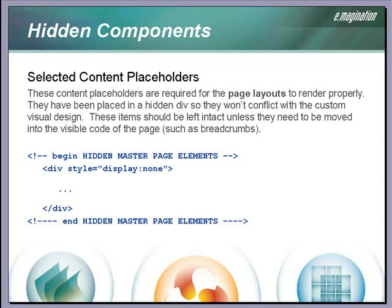Those hidden elements have been placed in a div tag at the bottom of the code with the style set to display none. These elements include many content placeholders which correspond to the layout of a default Moss design. We cannot remove these content placeholders completely because the default page layouts rely on them to render the page, so it is best to leave them inside the hidden div tag. You could also use a hidden ASP.NET panel control to accomplish the same thing.